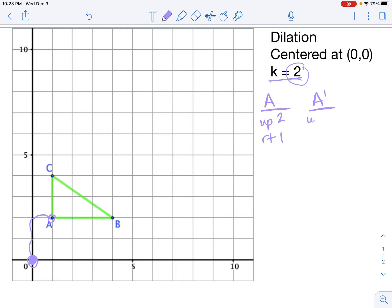So A prime is going to be 2 times that distance since k equals 2. It will be the same direction, so up, but 2 times 2, so up 4, right 2. I've just doubled that distance. To graph where A prime should be, I go back to the center of dilation, and I'm going to count up 4, right 2. So this will be the location of A prime.